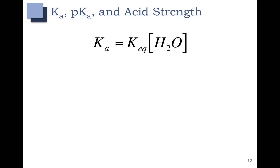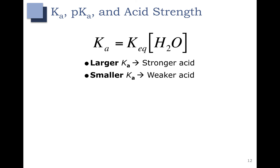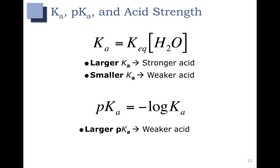So now we have our equation for Ka, and we know Ka equals Keq times water. Large Ka values correspond to stronger acids, and smaller Ka values correspond to weaker acids. Usually, we don't look at Ka values directly — we prefer to look at the negative log of the Ka values, or the pKa. Because of the negative log, large pKa values correspond to weaker acids, and small pKa values mean very strong acids.